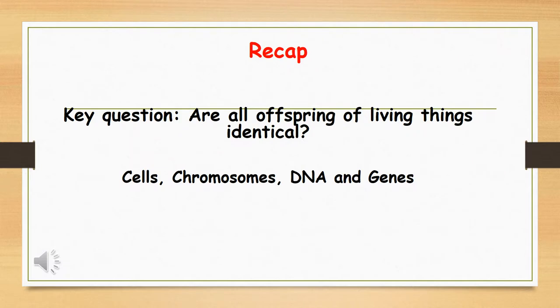To recap what we did in week 6 and week 7 for science, we looked at the key question: are all offspring of living things identical? And we looked at that for humans and for animals. We've also briefly spoken about cells, chromosomes, DNA and genes and how these characteristics can be passed down through inheritance.